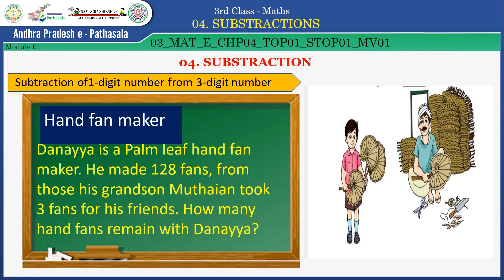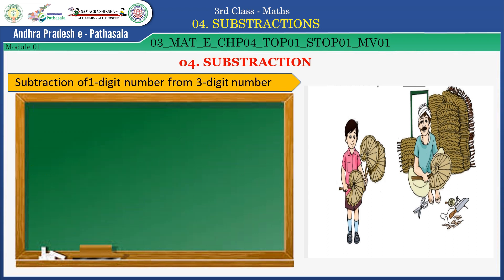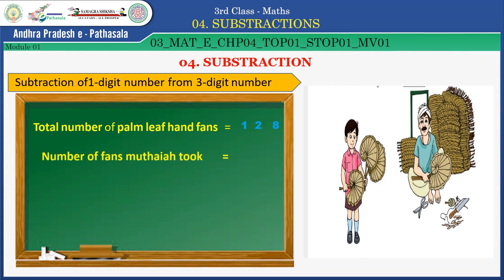Read the question one more time. Dhanaya is a palm leaf hand fan maker. He made 128 fans. From those, his grandson Murtaya took three fans for his friends. How many hand fans remain with Dhanaya? Total number of palm hand fans: 128. Number of fans Murtaya took: 3. Now, we have to do which operation? Subtraction — minus operation.